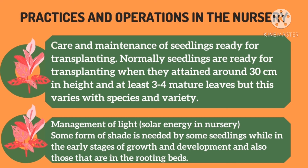Third is the care and maintenance of seedlings ready for transplanting. Normally, seedlings are ready for transplanting when they attain around 30 cm in height and at least 3 to 4 mature leaves, though this can vary with various species. Fourth is management of light or solar energy in the nursery — some form of shade is needed by some seedlings in the early stage of growth and development, including those in rooting beds.